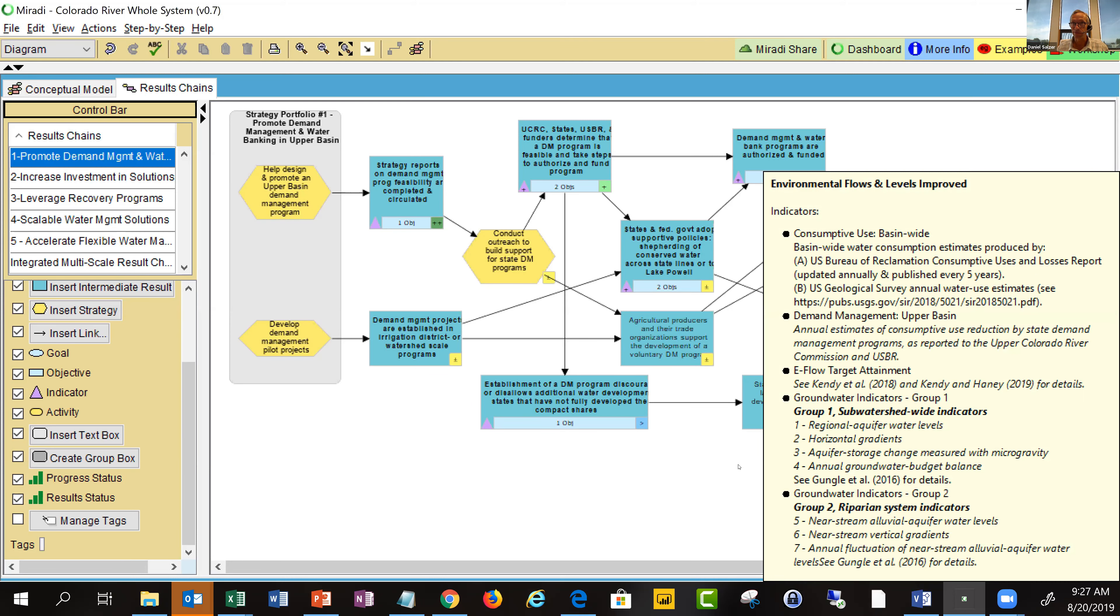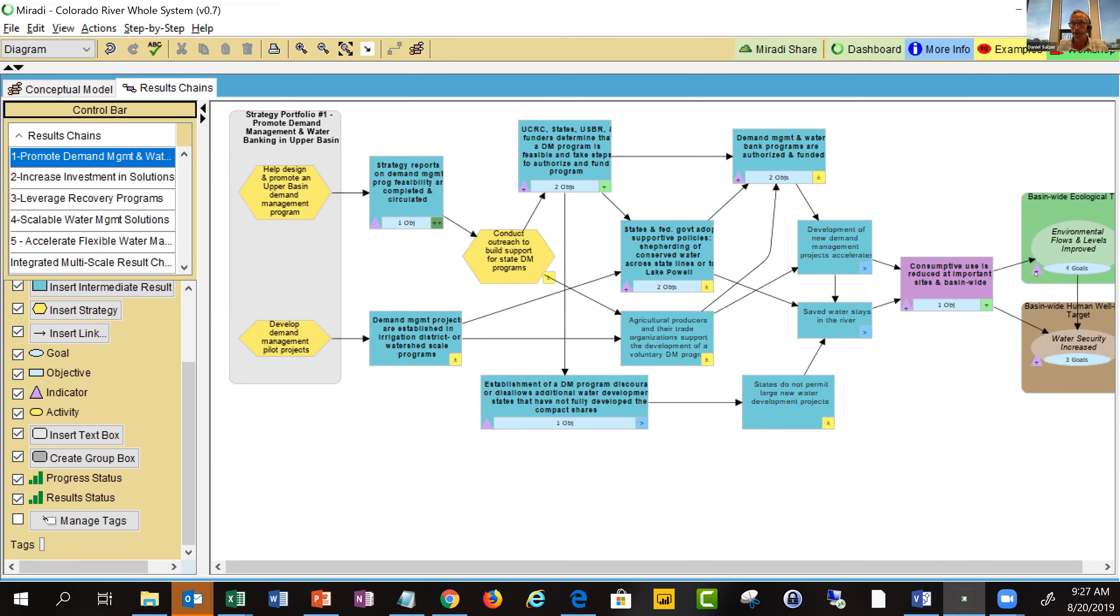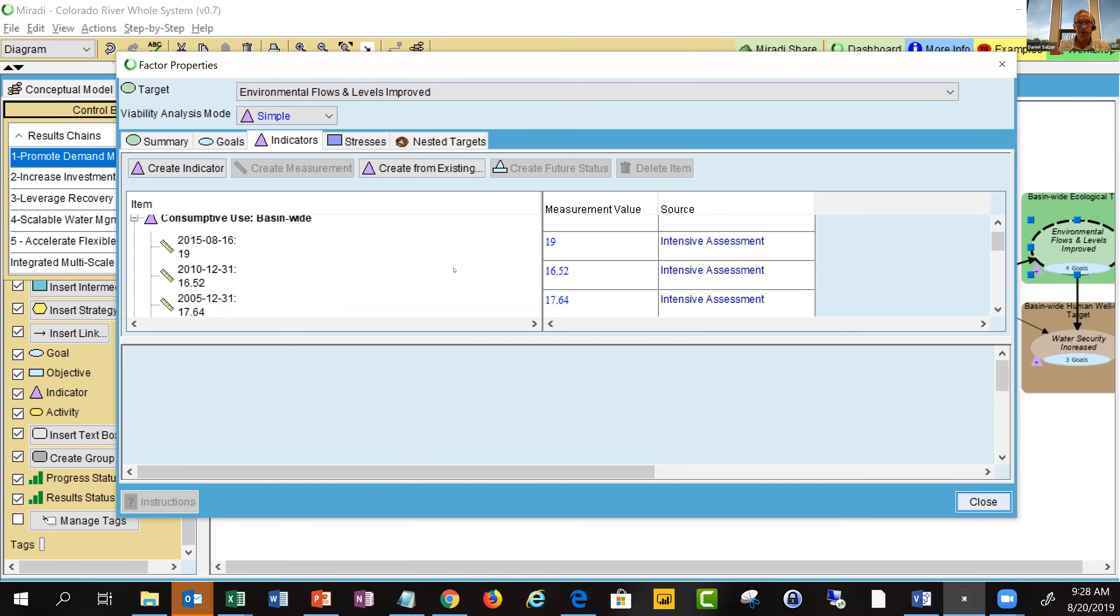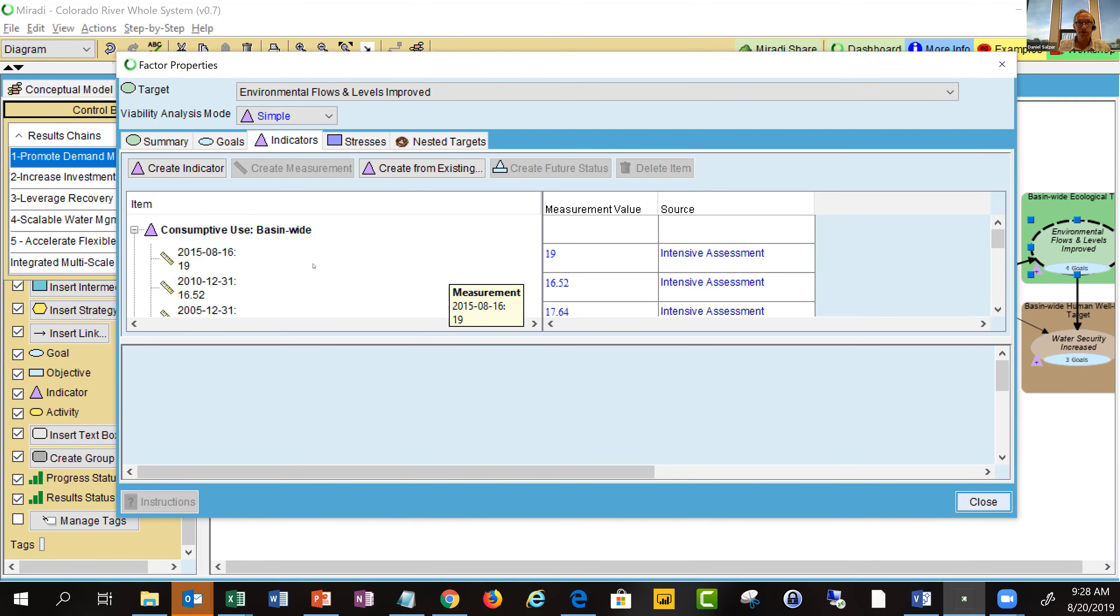If I double click, in this case I'll go to the environmental flow example, I'll open up a dialogue box. In addition to having the measurable statements on there, this is where the team can enter specific indicator values for that.